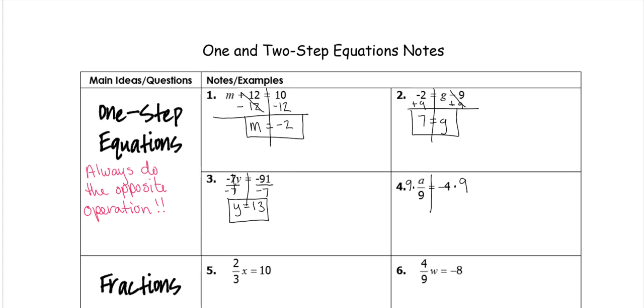So a 9 divided by a 9 is 1, which gives us just 1a. And then negative 4 times 9 is negative 36.